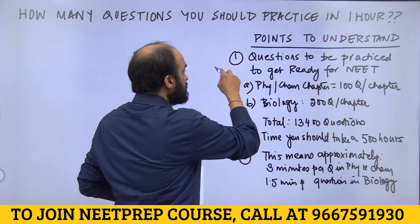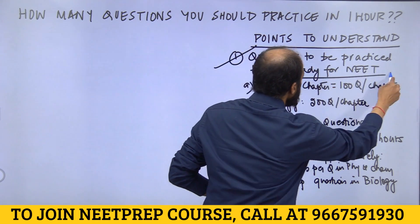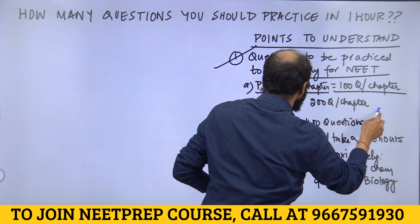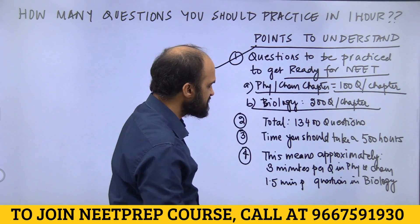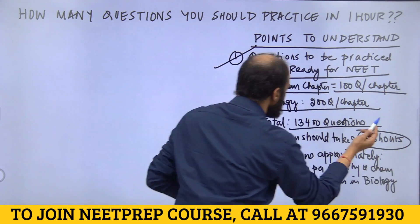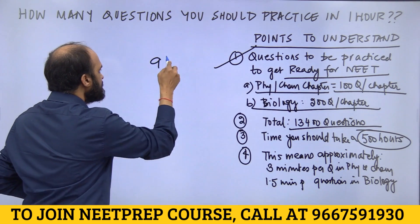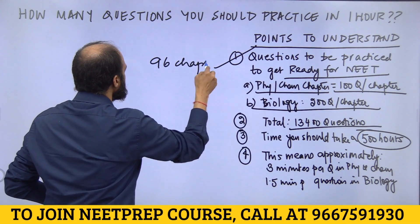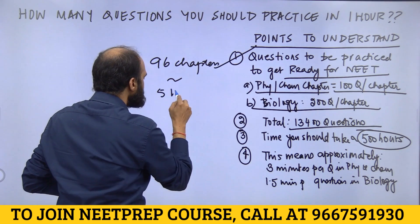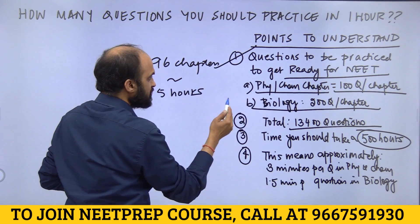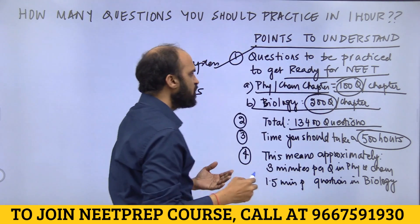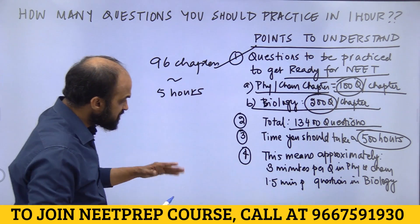Please understand: what I've told you is that to get ready for NEET, you have to practice 100 questions per chapter in physics and chemistry, and 200 questions per chapter in biology. This becomes 13,400 questions, which is approximately 500 hours — derived from 96 chapters at approximately 5 hours per chapter, whether that's 100 questions in physics/chemistry or 200 in bio since you can do those faster.